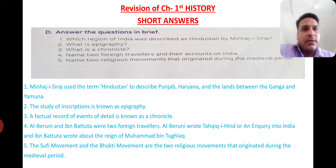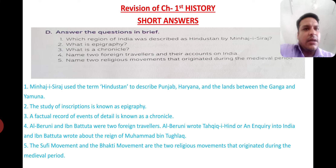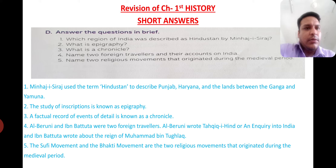Next: What is a chronicle? A factual record of events in detail is known as a chronicle. It refers to recording any event truthfully and accurately, organized date-wise. Such a factual, date-wise record is called a chronicle.